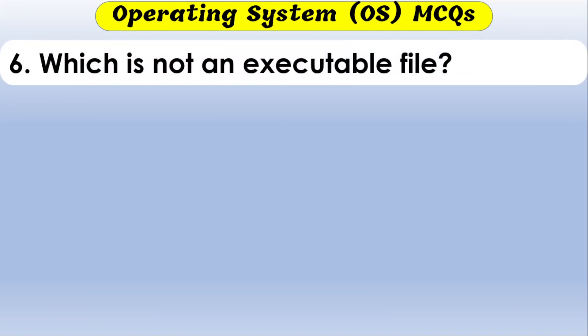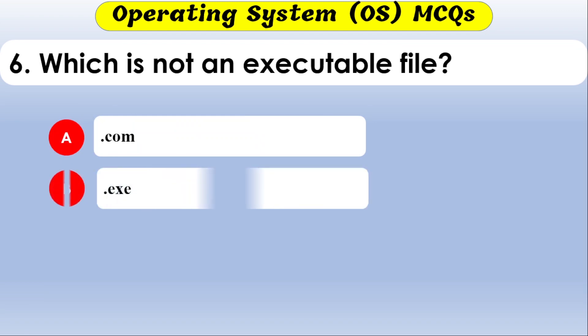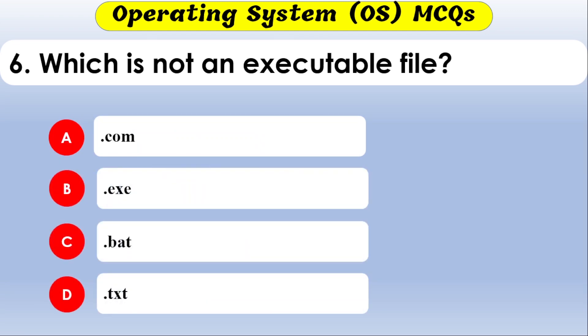Which of the following is not an executable file? The options are .com, .exe, .bat, or .txt. The correct option is .txt — it is not an executable file.